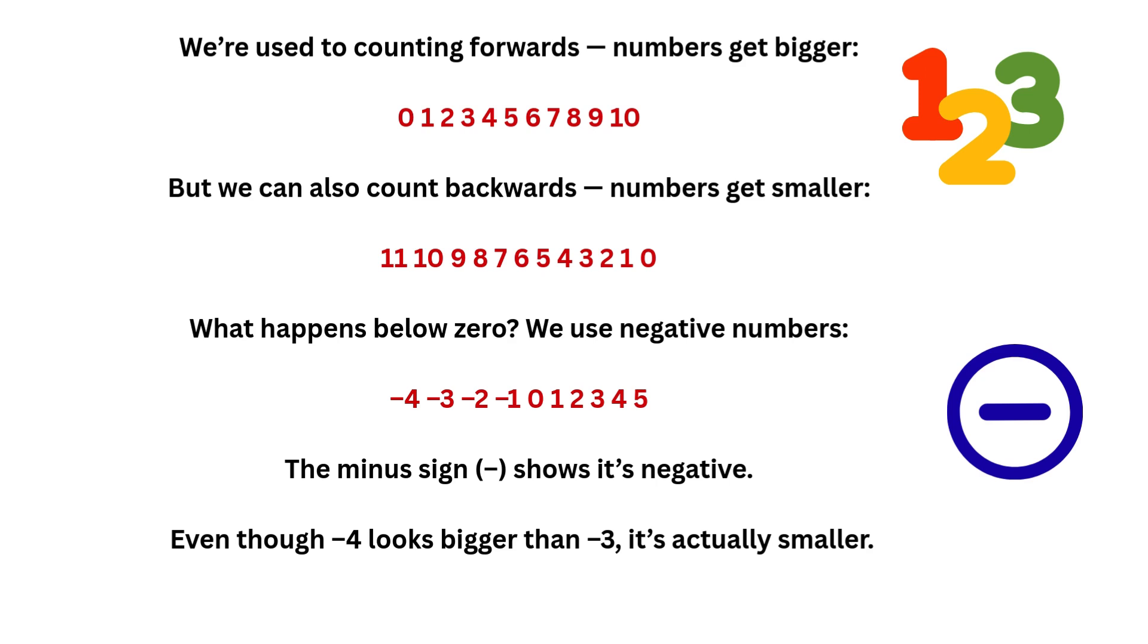We're used to counting forwards and we know when we count forwards the numbers get bigger. So just as an example, zero, one, two, three. Three is bigger than two, two is bigger than one and one is bigger than zero.